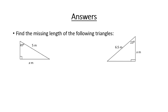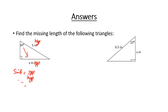Let's see how you went on the first question. We're trying to find a missing length. We know we've got our hypotenuse, our angle, and the opposite, so we use sine of theta equals opposite over hypotenuse. Sine of 65 equals x over 5. Multiplying both sides by 5: sine of 65 multiplied by 5 gives 4.53, so x equals 4.53 metres.